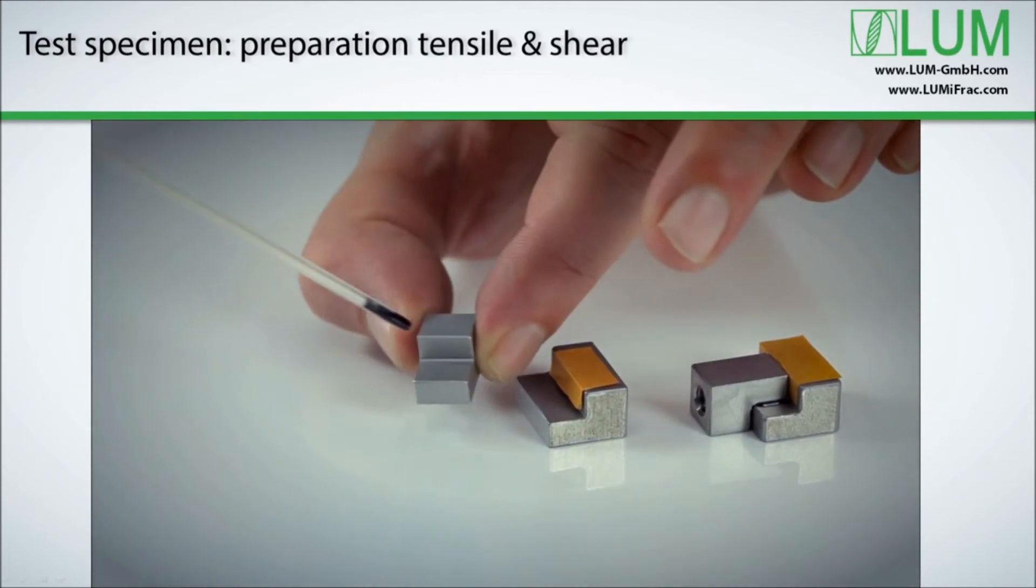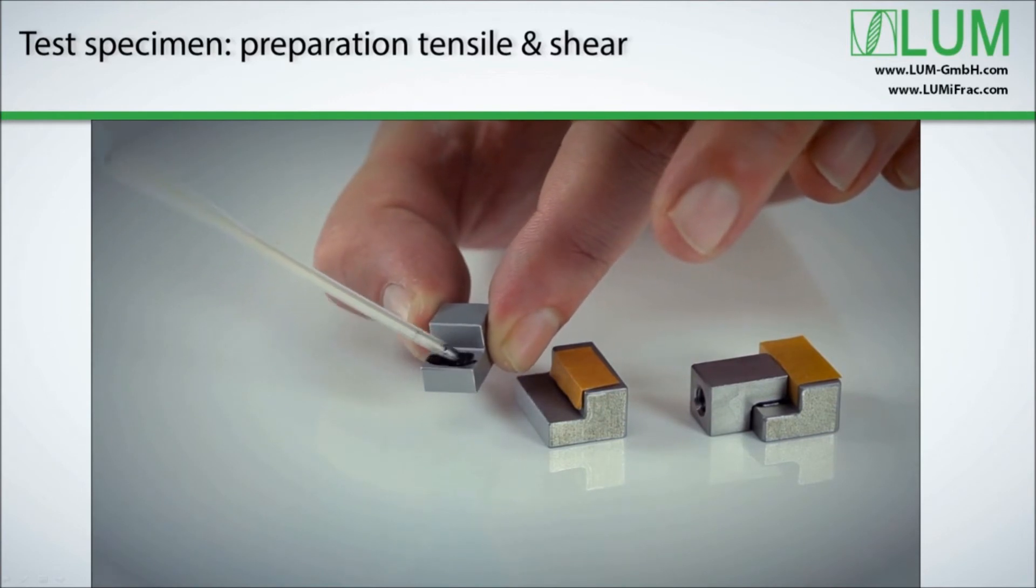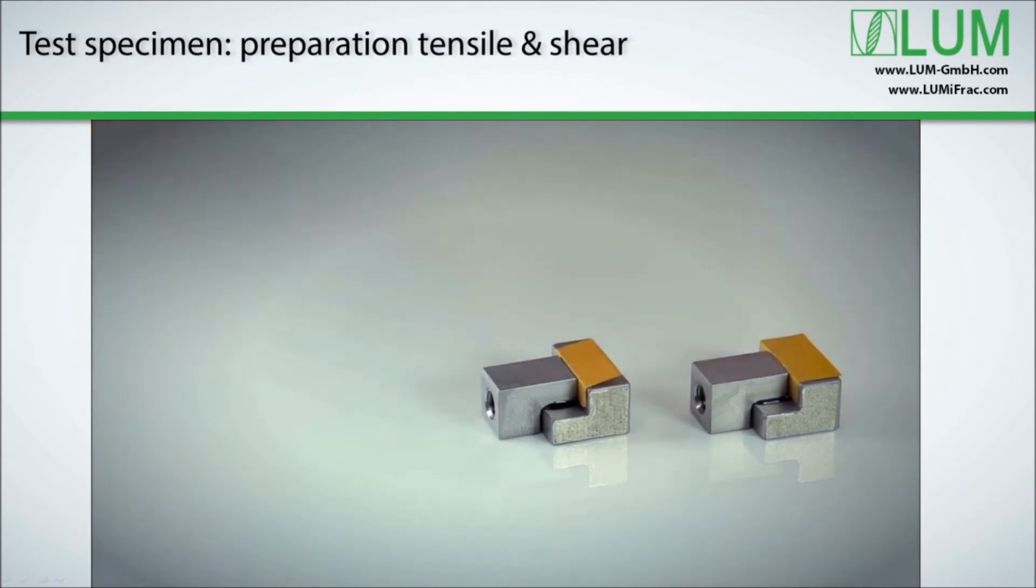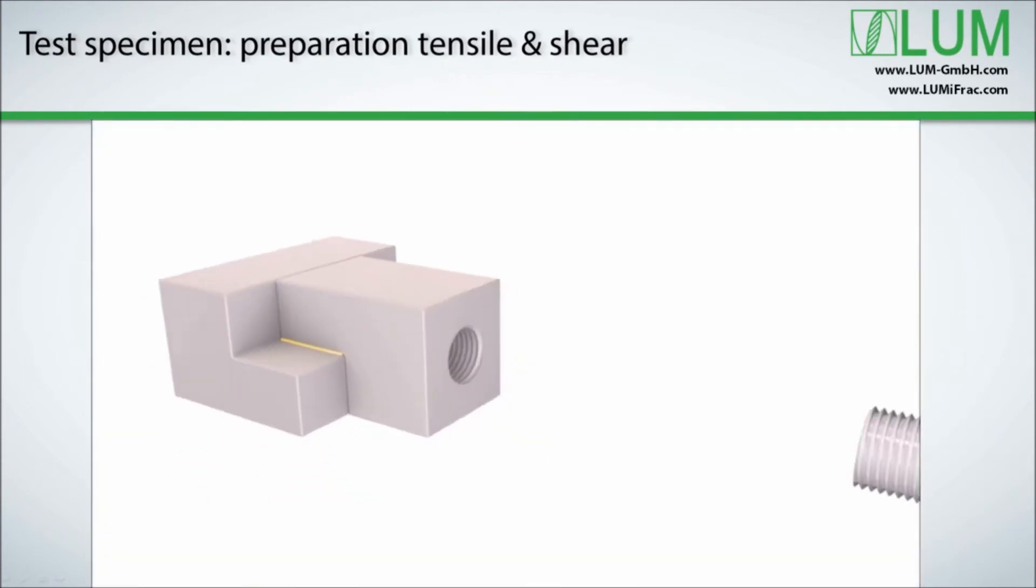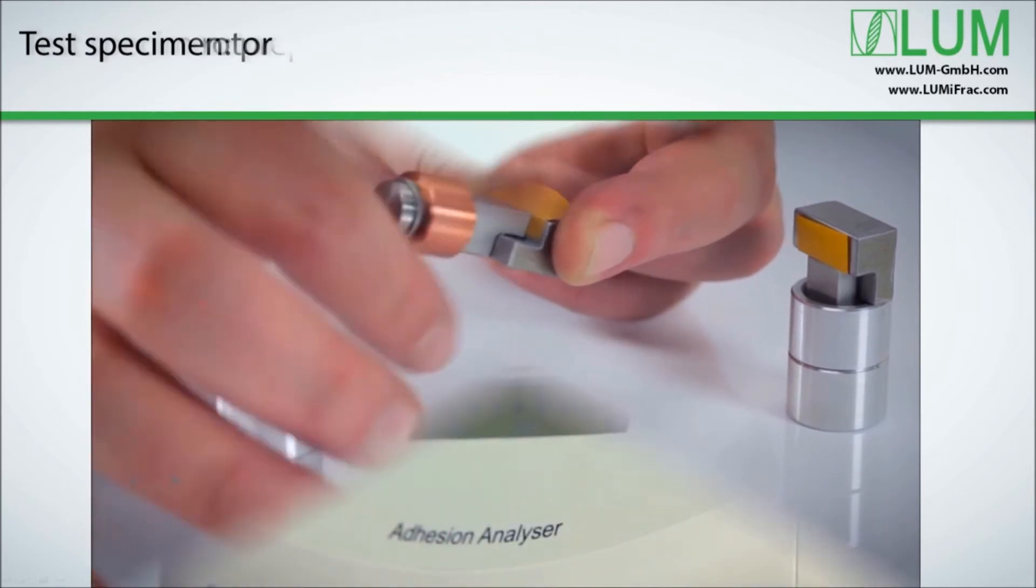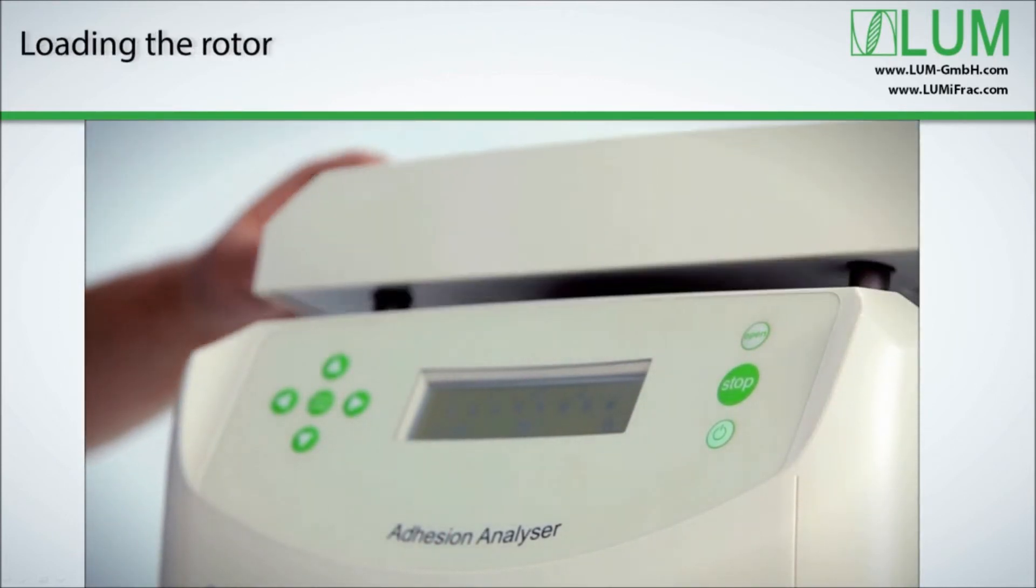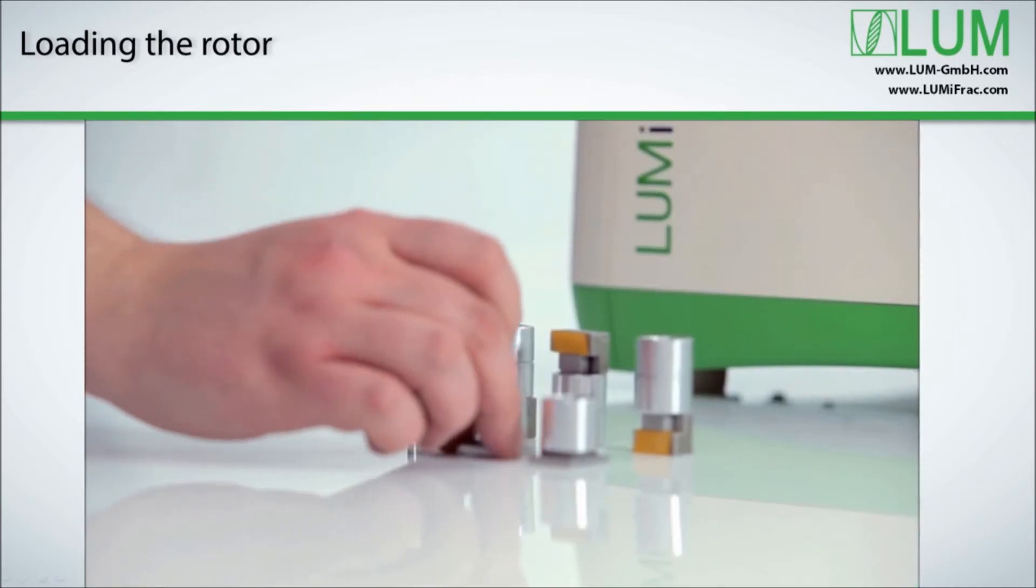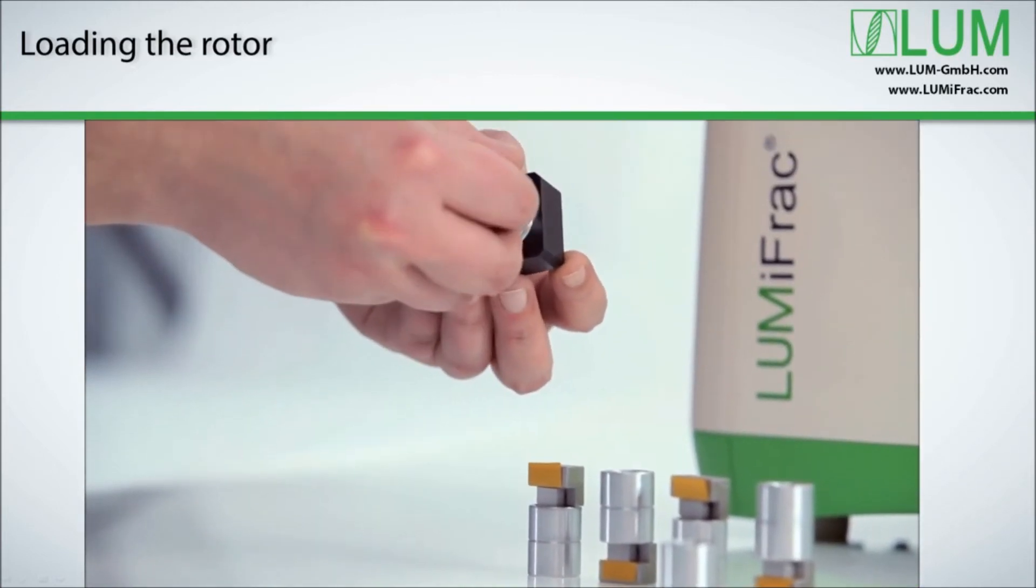Here you see shear specimen preparation for real. In this example, the yellow release paper is used to ensure bonding of the shear area only. Prior to testing, the mass body is assembled by a set screw and the guiding sleeve is slid on. You can see how simple preparation and assembly are in our case. Now that we have prepared the test specimens, we can move on to assembling them and proceed putting them into the detection modules which are housed in the LumiFrac.